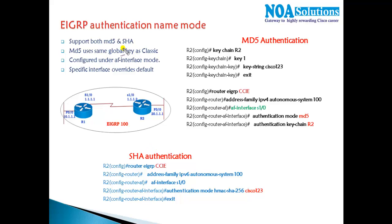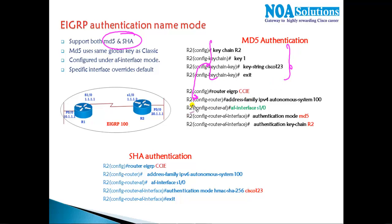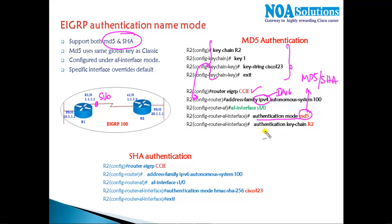Comparing with classic mode: classic mode only supports MD5, whereas EIGRP named mode authentication supports both MD5 and SHA (Secure Hashing Algorithm). For MD5, the steps are similar — create a key chain, key number, and key string. Once they match on both sides, we apply it, but in named mode we don't configure directly on the interface. Instead, we go into the router routing instance mode, then under the address family IPv4 or IPv6, define the interface, and give the option 'authentication mode' — choosing either MD5 or SHA — then define the keychain.